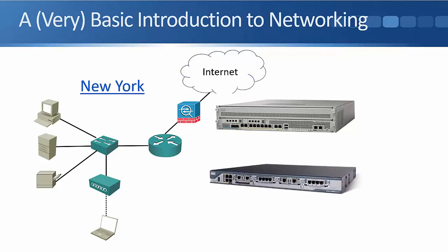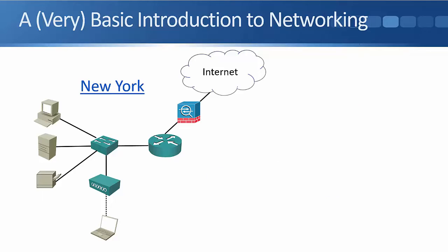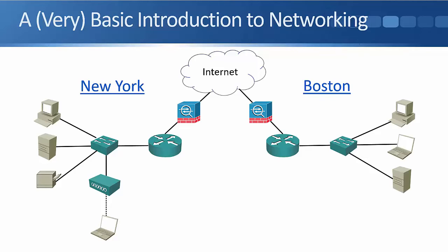Okay, so that was our New York office, the local area network and its connectivity out to the internet. In a larger company we're not going to just have one office in New York. That example here, let's say we've also got an office in Boston as well. In Boston we're going to have a similar kind of setup, the same kind of devices in there. We're going to have the local area network in Boston and we've also got local connectivity to the internet from Boston as well.